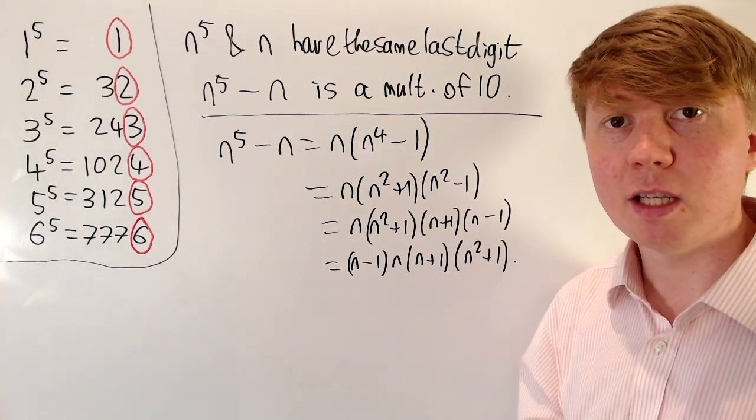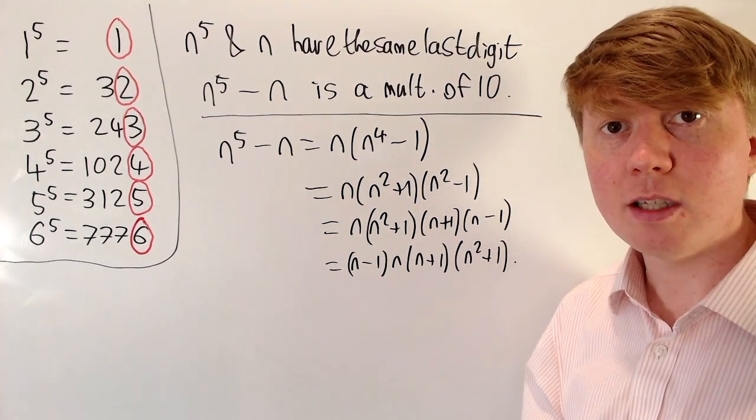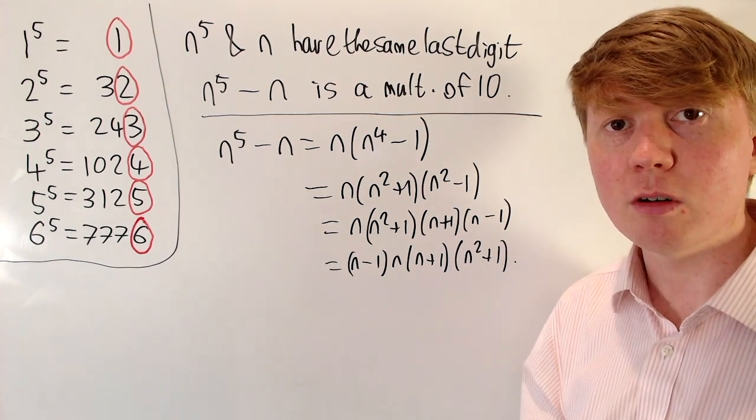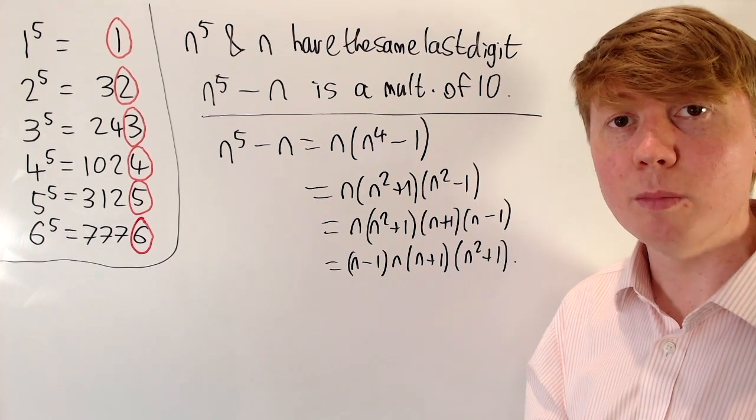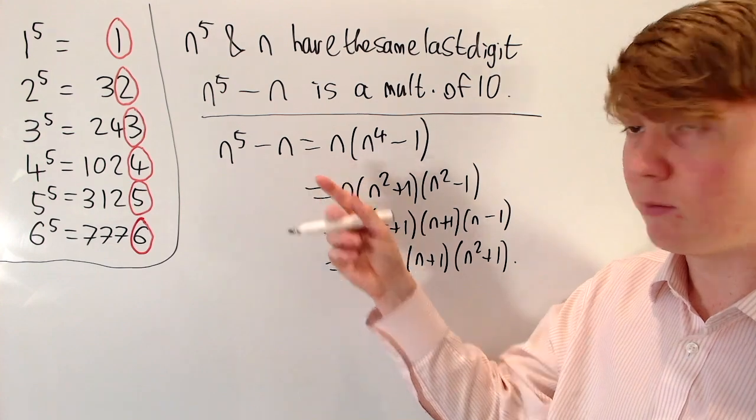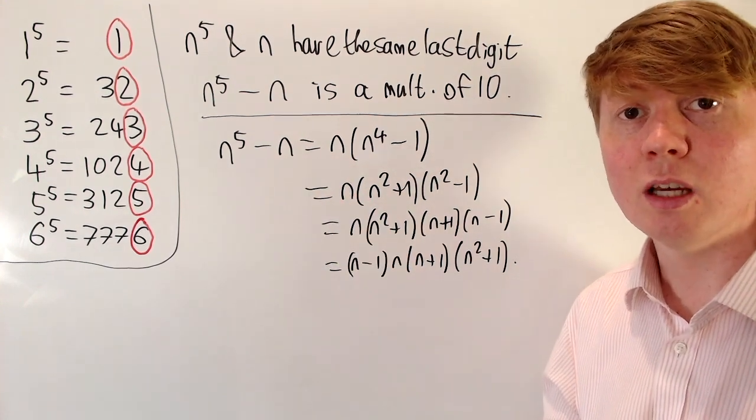So now that we've factorized this, the idea is that in order to show that this is a multiple of 10, we'll first show that it's a multiple of 2, then we'll show that it's a multiple of 5, which would prove then if you've got a multiple of 2 that's also a multiple of 5, this would mean that n to the 5 minus n has to also be a multiple of 10.